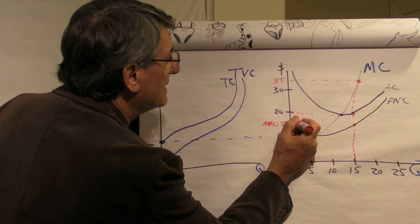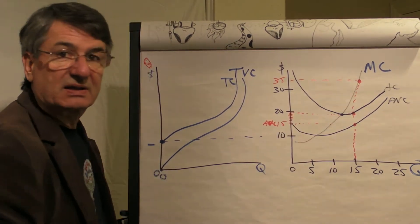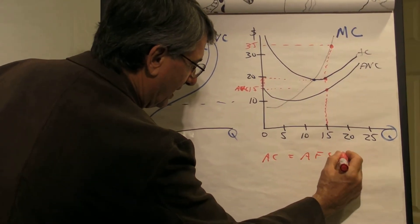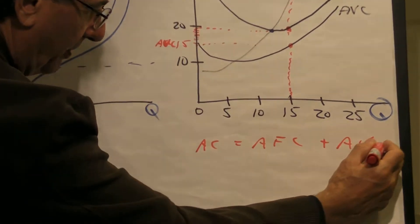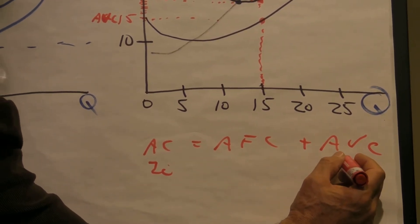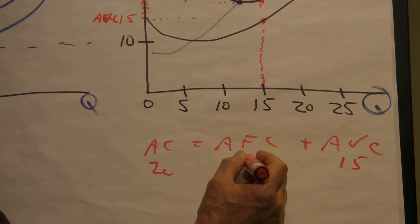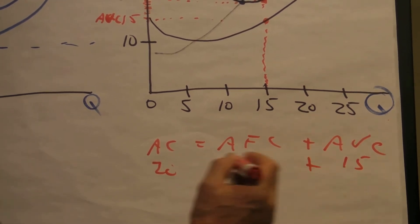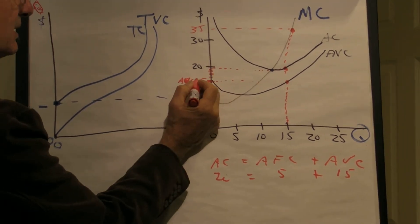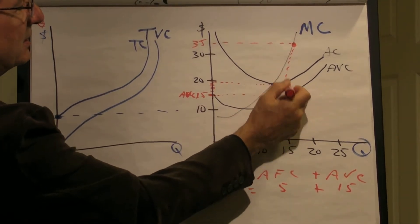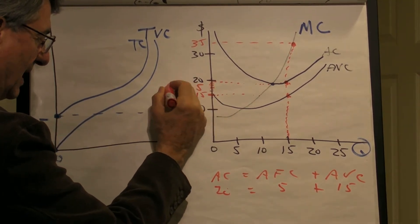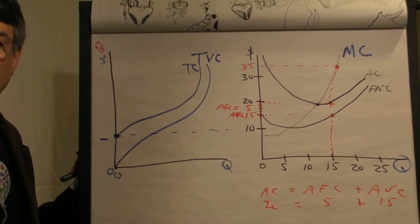Do you know what the average fixed cost is? Yes — because average cost equals average fixed cost plus average variable cost. So if you know the average cost is twenty and the average variable cost is fifteen, then the average fixed cost must be five. And it turns out that the gap between these two points is five dollars, so this five dollars represents average fixed cost when you produce fifteen units.